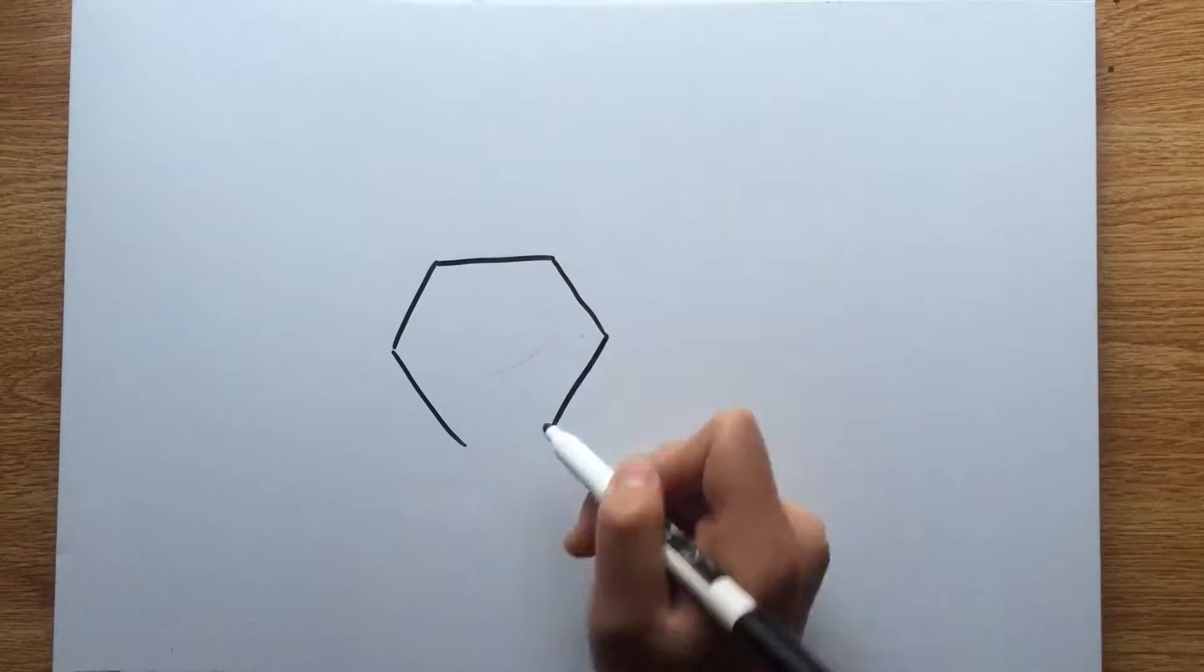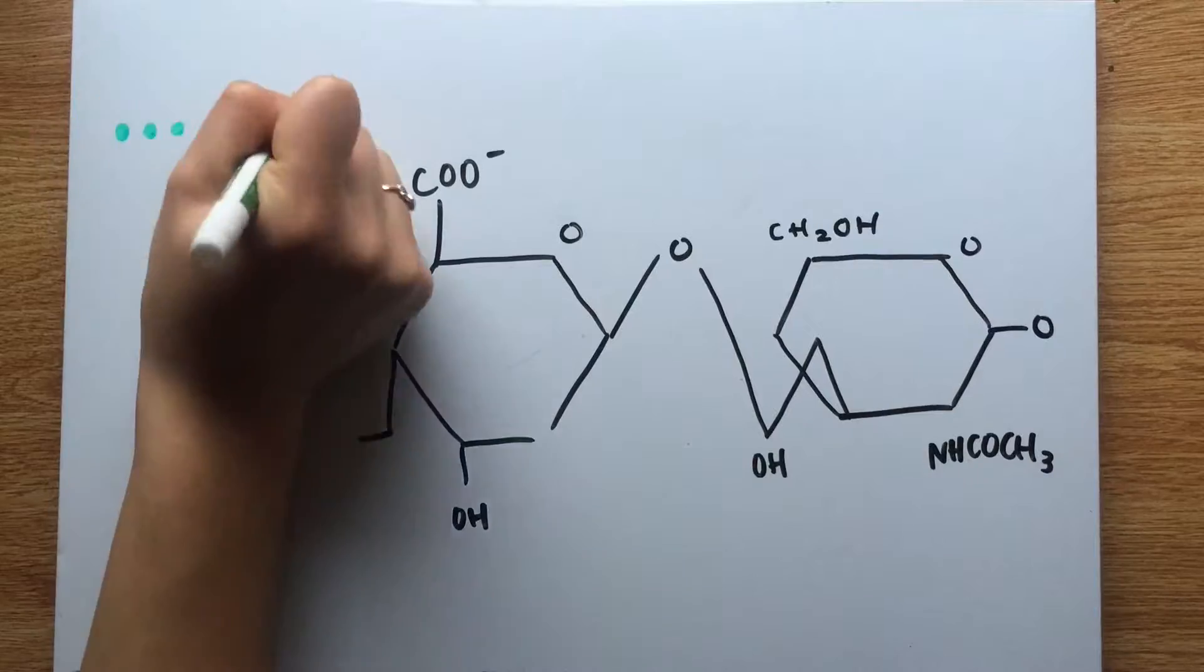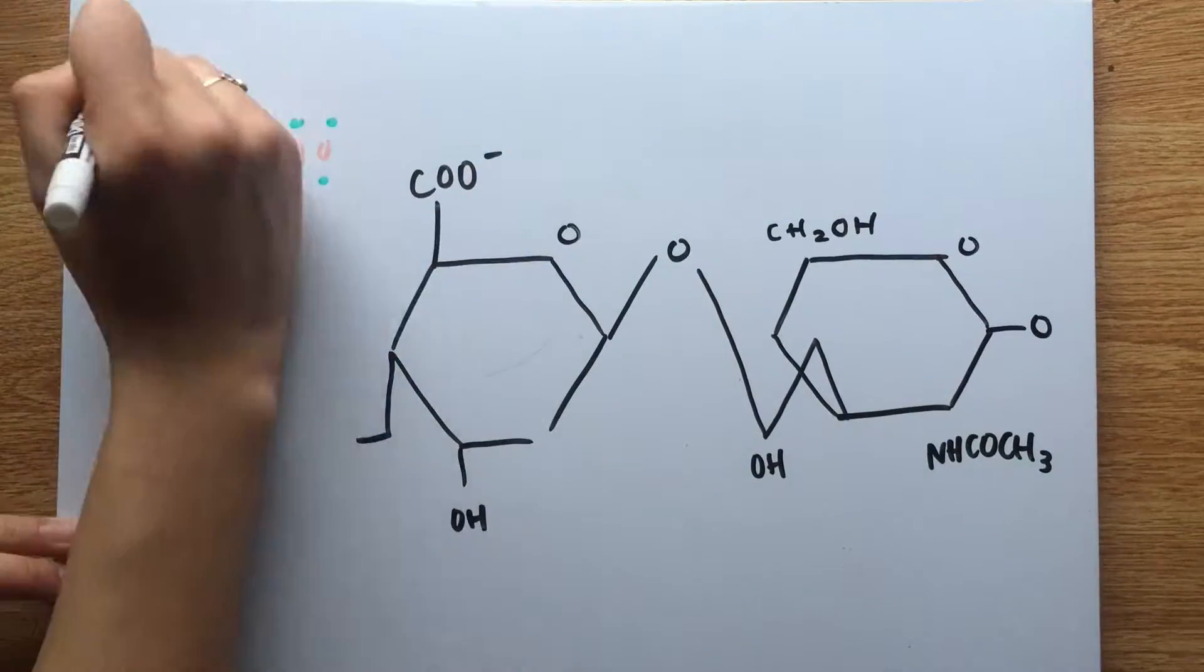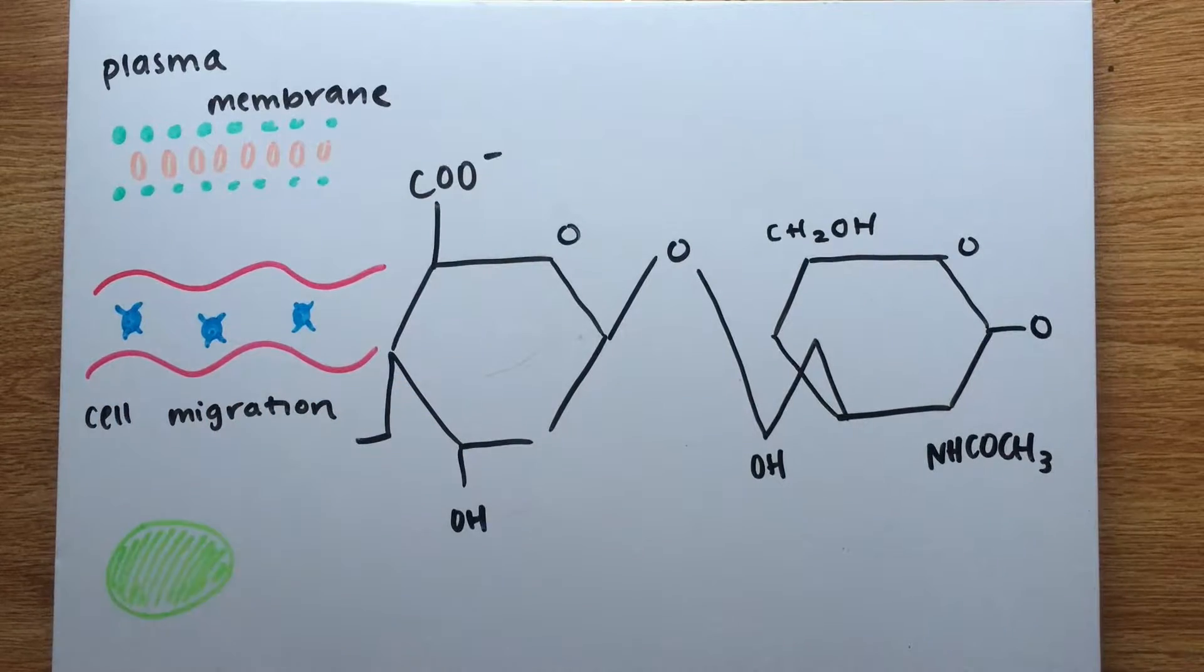Hyaluronic acid is an anionic or negatively charged GAG, and unlike heparin sulfate, is non-sulfated and synthesizes in the plasma membrane. Widely distributed, it contributes to things like cell migration and the development of malignant tumors.